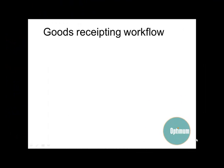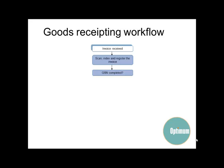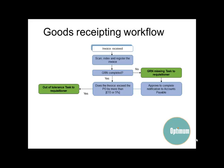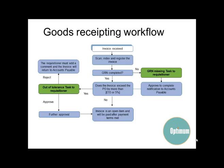Let's look at a goods receipt workflow. Accounts scan, index, and register an invoice. They then check to see if the requisitioner has goods receipted the purchase order, indicating that the goods or services have been received. If the PO has not been goods receipted, Agresso will now issue the requisitioner with a missing GRN task. By selecting the task, reviewing the details and approving, the requisitioner can goods receipt the order from the task without moving screens. The second check is to confirm that the invoice does not exceed the purchase order amount by more than £15 or 5%. If yes, Agresso issues the requisitioner with an out-of-tolerance task. In the unlikely event that the out-of-tolerance task is rejected, the requisitioner must add a comment and the invoice will return to accounts payable. If the task is approved by the requisitioner, then Agresso will forward the out-of-tolerance invoice to the requisition approver to approve before finance can pay the supplier.